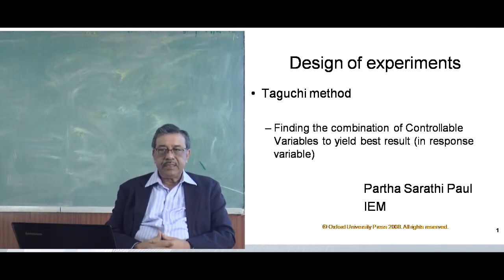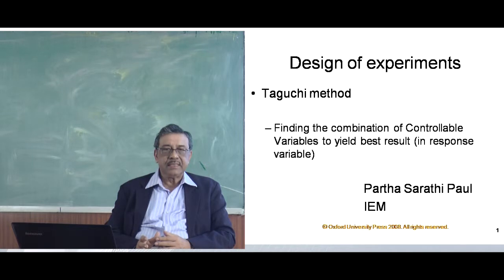What we actually mean by Design of Experiments is finding the combination of controllable variables to yield the best result in the response variable. This has some relation with what we discussed during my talk on fuzzy logic systems. I will try to explain what is controllable variable, what is the response variable and what is it that we are trying to control here. We will do some little recapitulation before we go ahead with this subject.